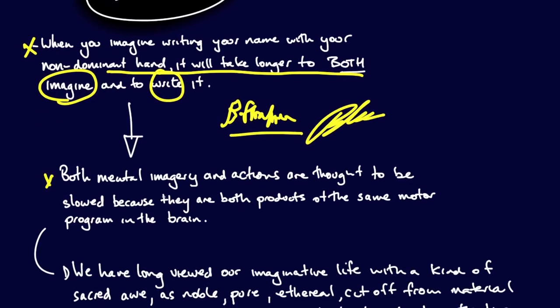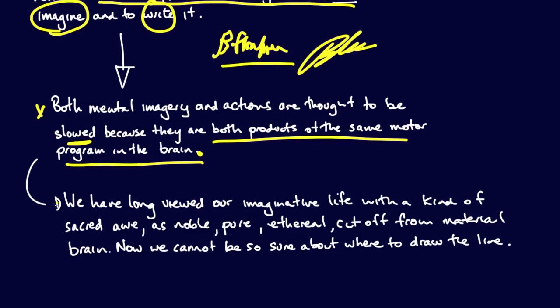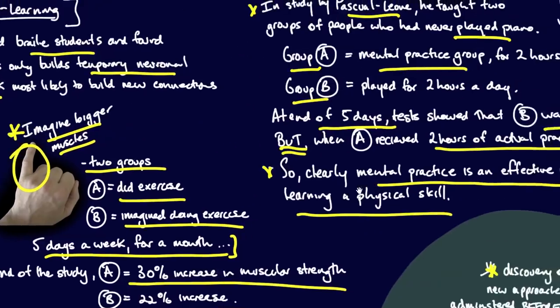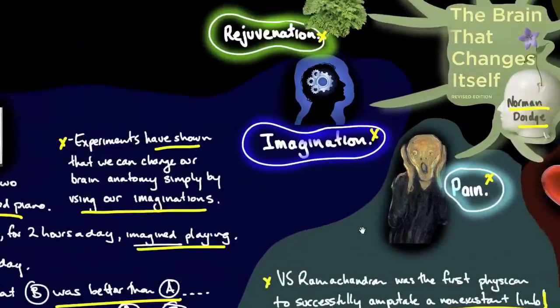Here we are at the point. Both mental imagery and actions are thought to be slowed because they are both products of the same motor program in the brain. We have long viewed our imaginative life with a kind of sacred awe as noble, pure, ethereal, cut off from the material brain. Now we cannot be so sure about where to draw the line. Ultimately it proves how powerful the imagination really is.